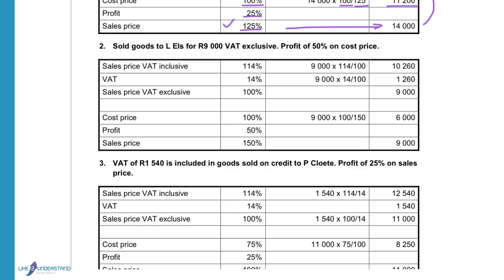Goods sold to L's for 9,000 VAT exclusive, meaning VAT is not included in the 9,000. A profit of 50% on cost price is made, therefore cost price is 100%, profit 50%, sales price 150%. The sales price including VAT is 114%, VAT is 14%, and sales income excluding VAT is 100%. This 100% was given as 9,000. To calculate the sales price including VAT: 114 divided by 100 times the amount.